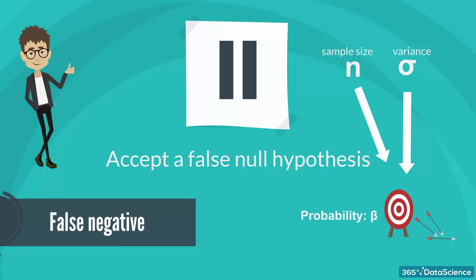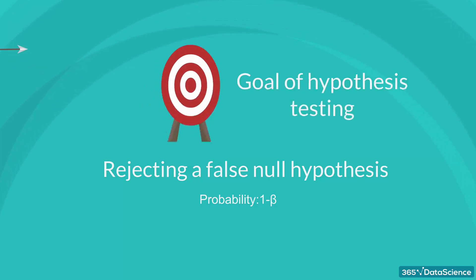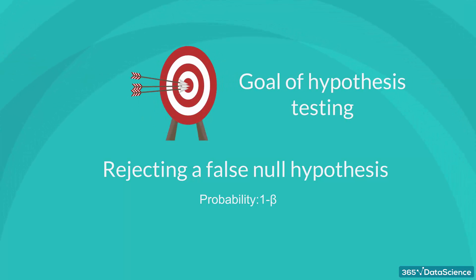We should also mention that the probability of rejecting a false null hypothesis is equal to 1 minus beta. This is the researcher's goal: to reject a false null hypothesis.